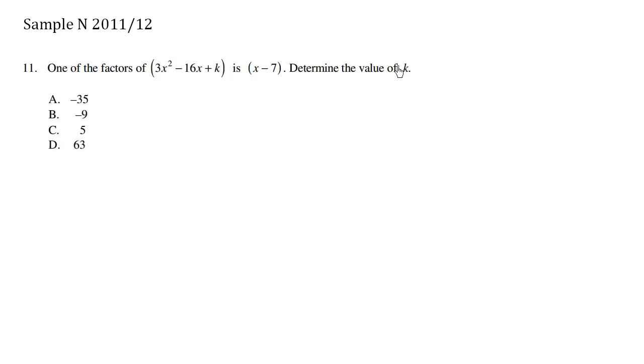Now there is a faster way. When we know that one of the factors is x minus 7, what does this mean? It means that for this polynomial function, the root is going to be the opposite of negative 7, which is positive 7.